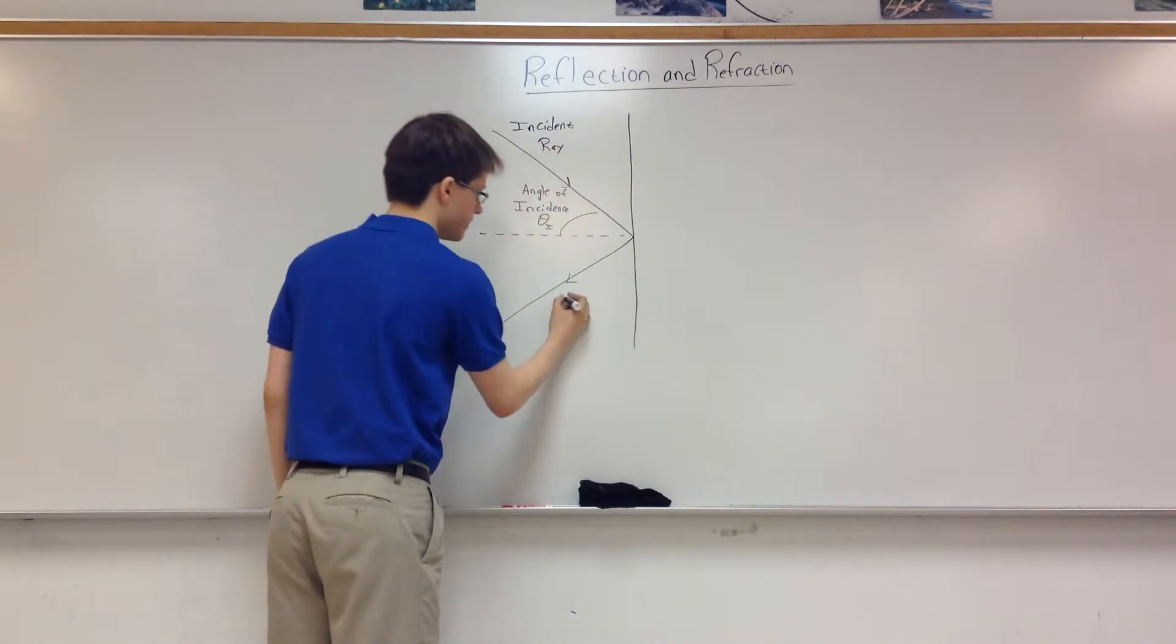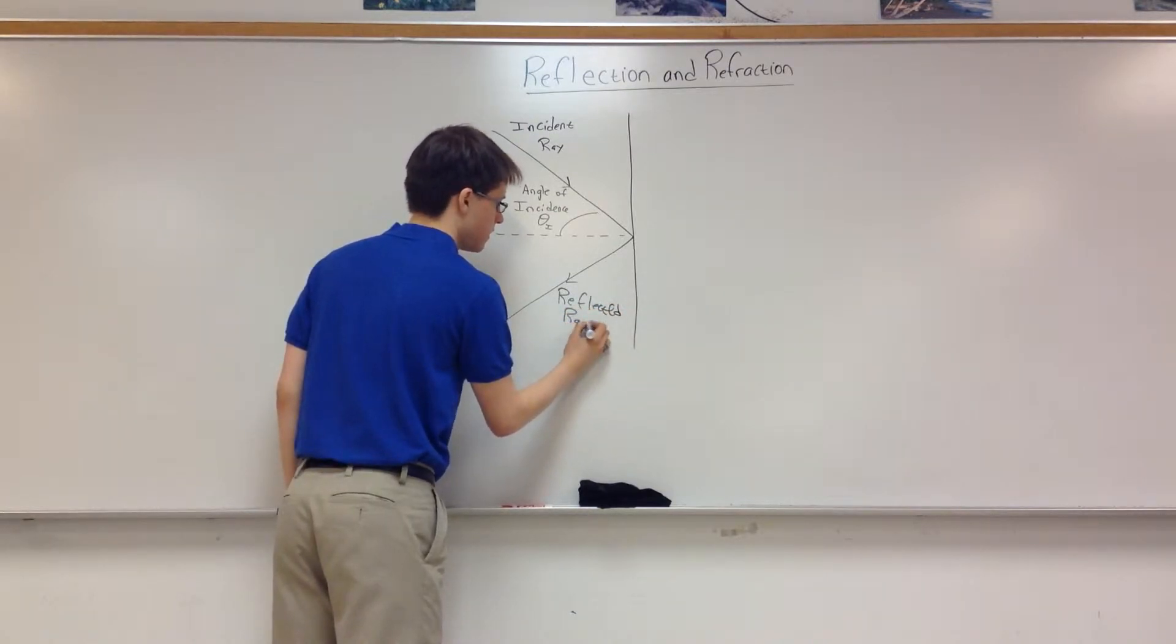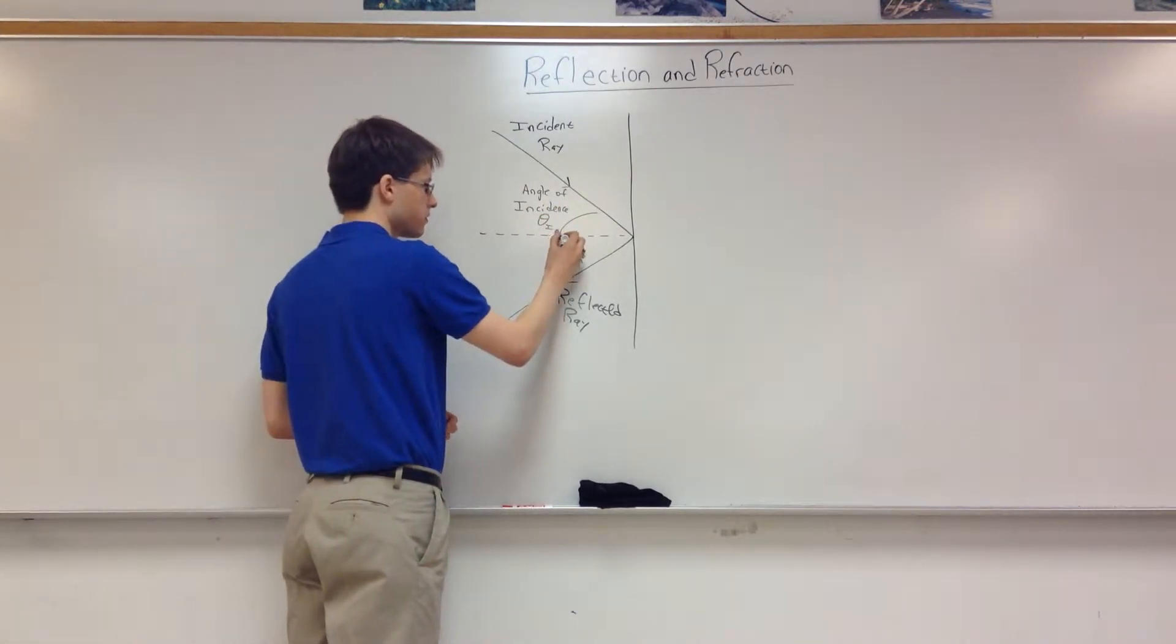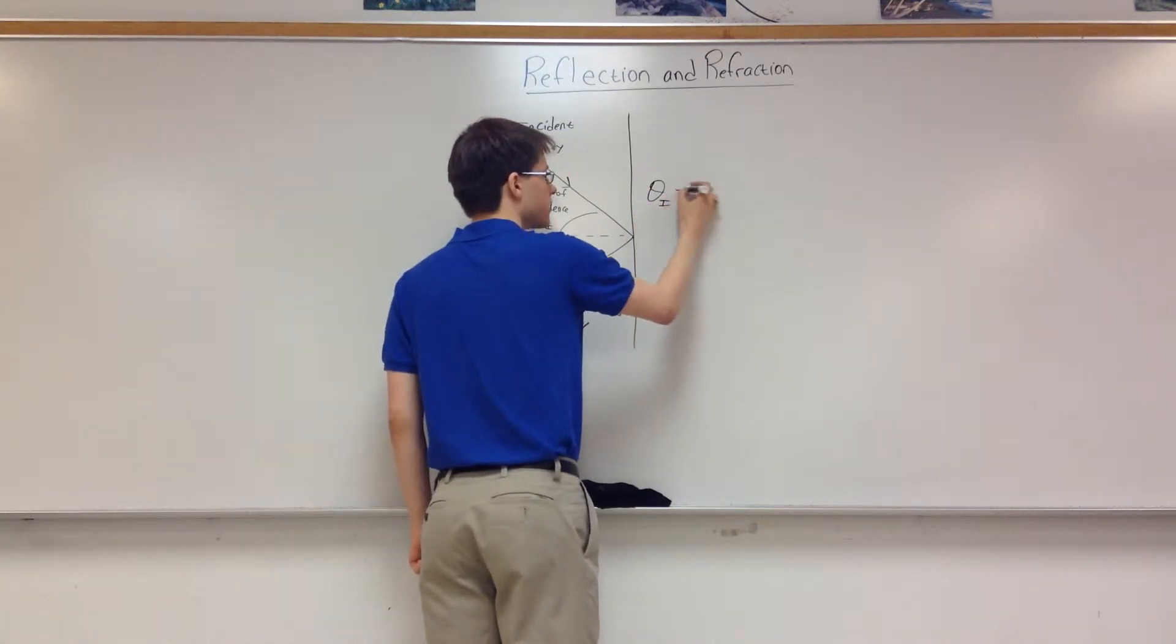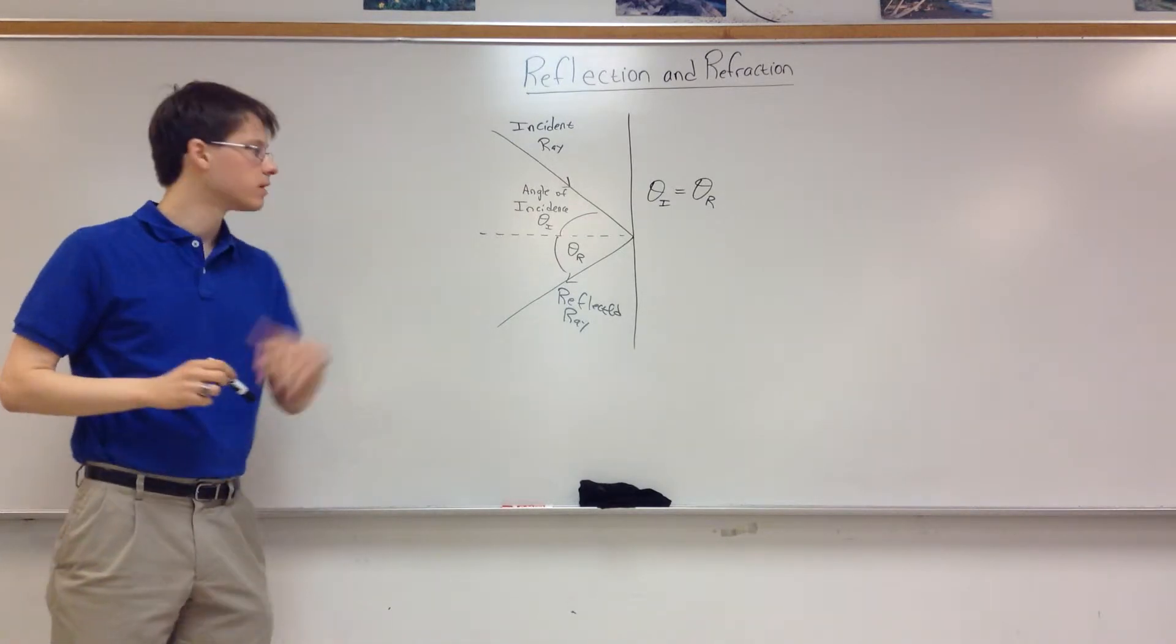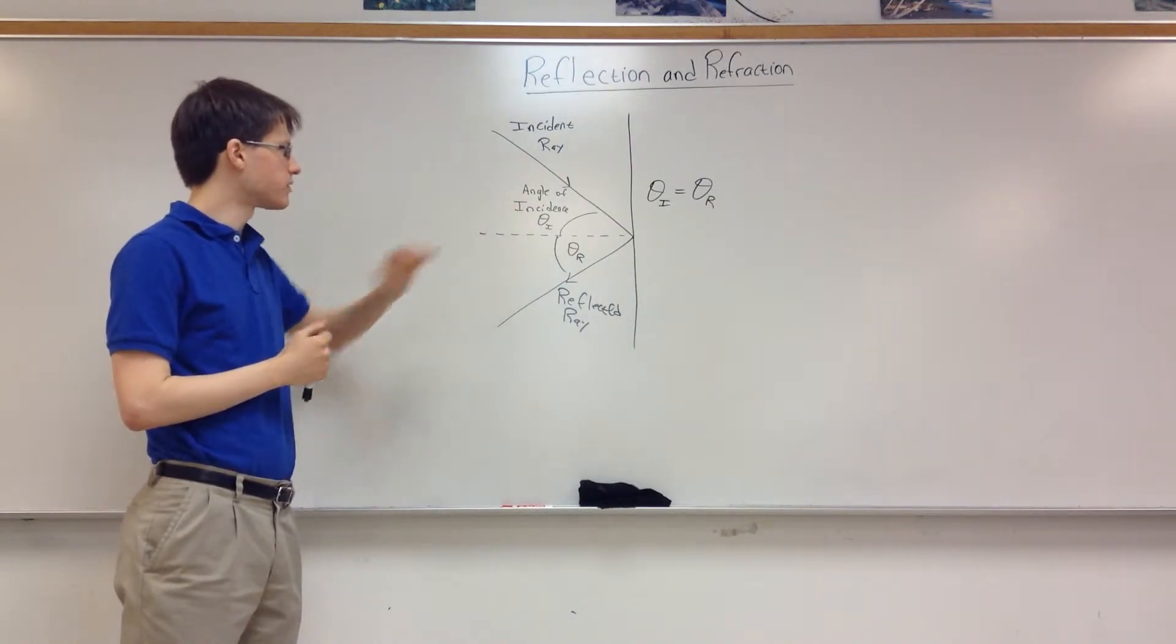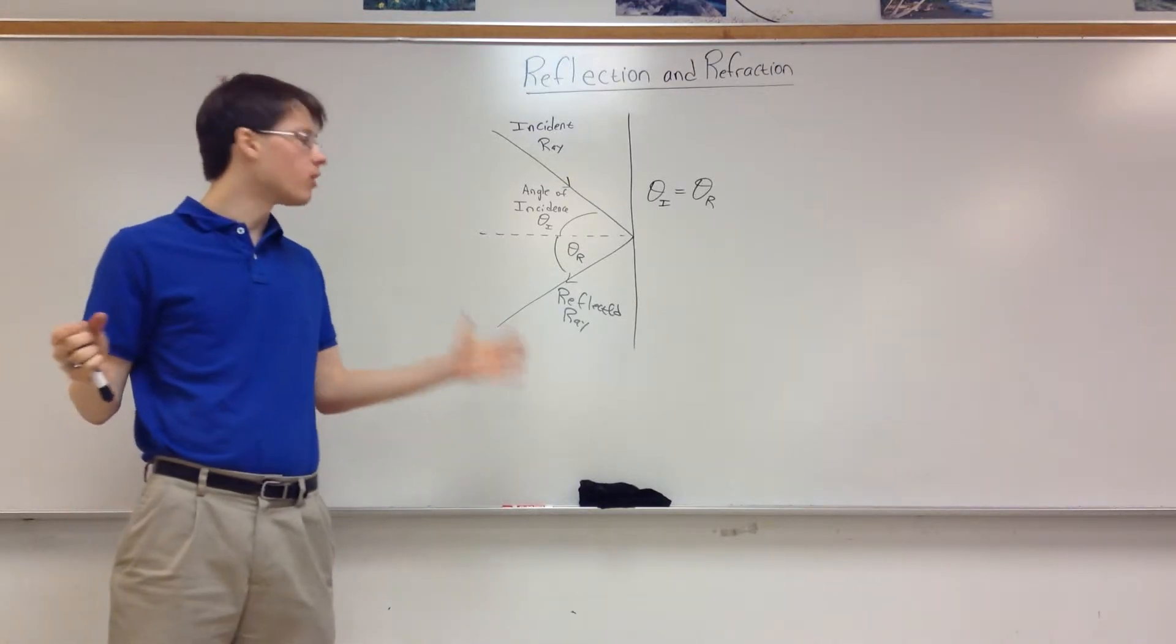You might guess that this ray is the reflected ray. And therefore, this is the angle of reflection. And these two angles are the same. And this is important. So the angle of incidence is equal to the angle of reflection. The angle in is equal to the angle out. By extension, these two are also equal. But these are the angle of incidence and reflection. So reflection is pretty straightforward. That's really all there is.